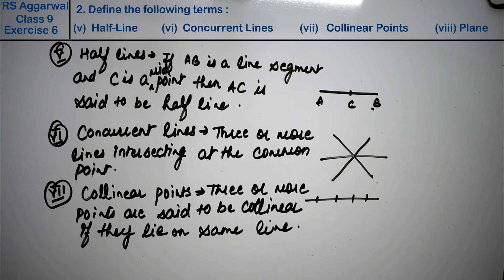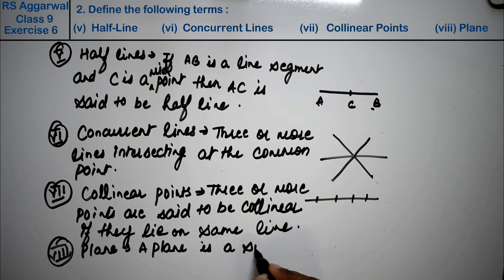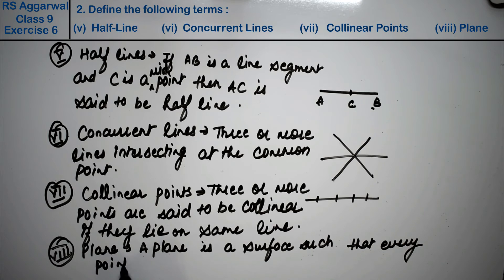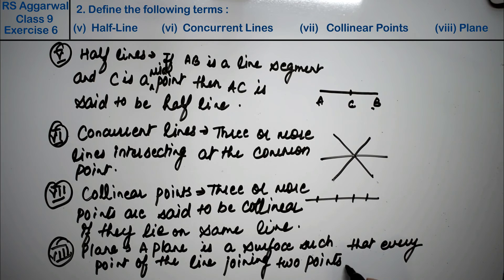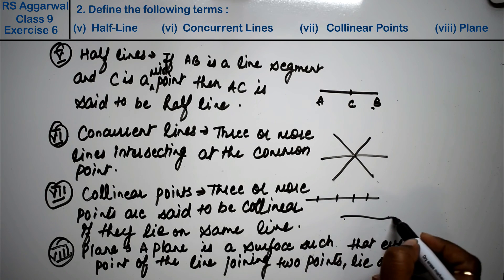Right, means last one is plane. Plane kya hoti hain? A plane is a surface. Plane surface hoti hain ek tarike ka jahaan pe koi bhi points bana ke line uspe join ki ja sakti hai, such that every point of the line joining two points lie on it.